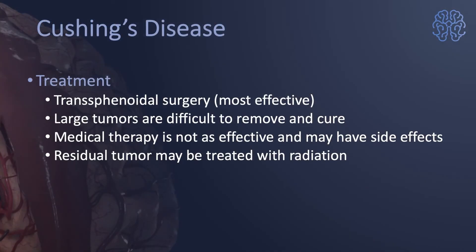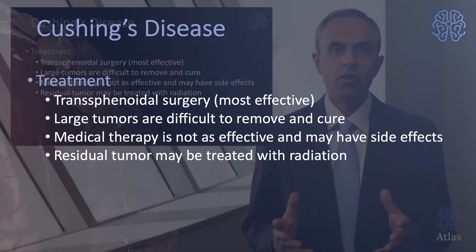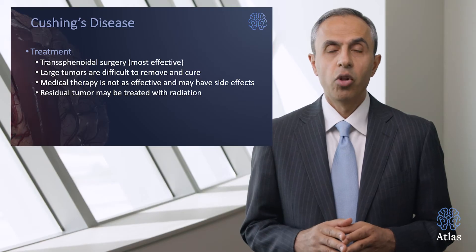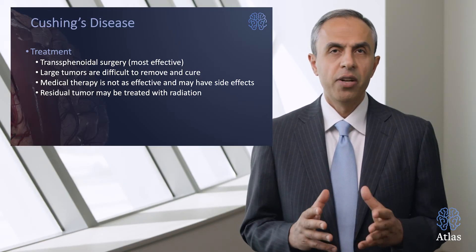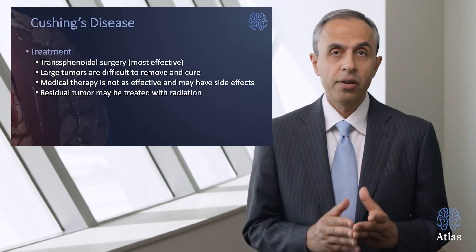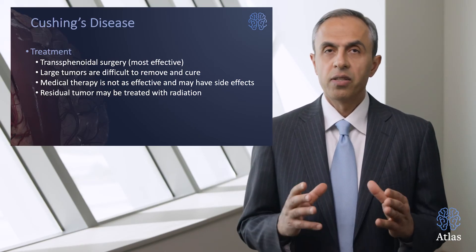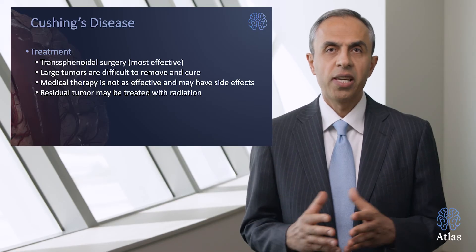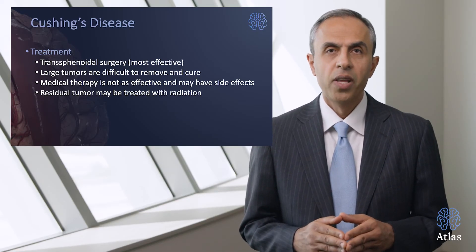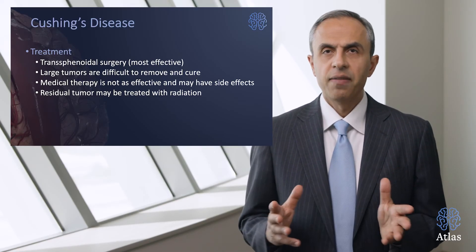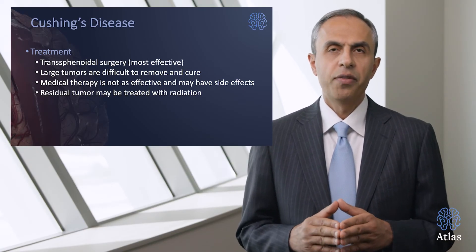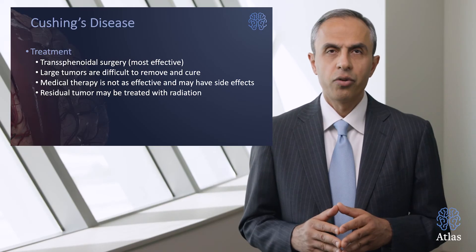Transsphenoidal surgery is most effective for removing as much of the tumor as safely as possible. Larger tumors can be very difficult to cure, which is why earlier diagnosis is so important — the smaller the tumor, the more effective surgery can be in providing cure. Medical therapy is not as effective as surgery, and residual tumors may be treated with radiation or radiosurgery.